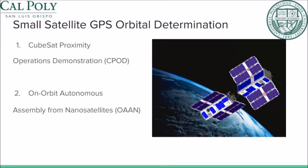One major push for GPS orbit determination for small satellites is to allow for autonomous nanosatellite docking. The two projects displayed here will utilize carrier phase differential GPS capability to determine relative position of the satellites within one centimeter. Both CPOD and OAN involve 3U CubeSats that will validate autonomous control for proximity maneuvers, rendezvous, and docking utilizing GPS data. If properly executed, GPS capability would become standard for nanosatellite integration, allowing for a whole new set of missions previously unavailable.